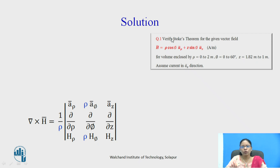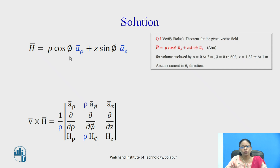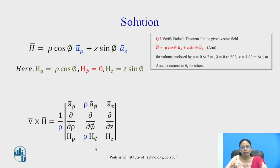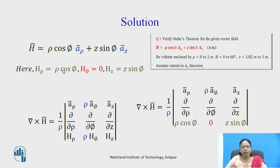Now let us determine the curl for the given question. The vector field given is h-bar = ρ cosφ · a_ρ + z sinφ · a_z. In the curl equation I need the values of h_ρ, h_φ, and h_z. The component along a_ρ gives h_ρ = ρ cosφ, the component along a_z gives h_z = z sinφ, and since there is no a_φ term, h_φ = 0.